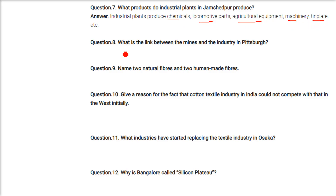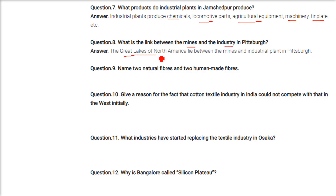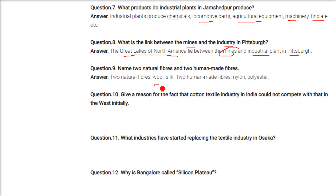What is the link between mines and industry in Pittsburgh? The Great Lakes of North America lie between the iron ore mines and the industrial plant in Pittsburgh. Name two natural fibres and two man-made fibres. Wool and silk are natural fibres; nylon, polyester, and acrylic are human-made fibres.